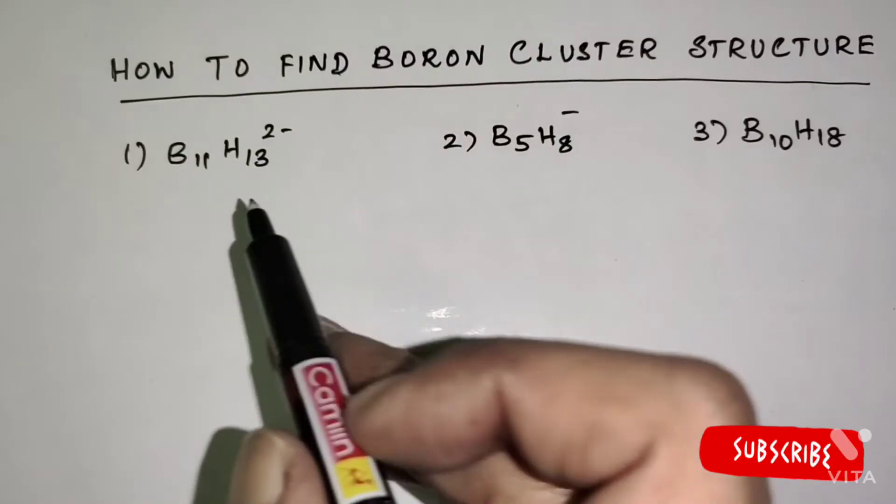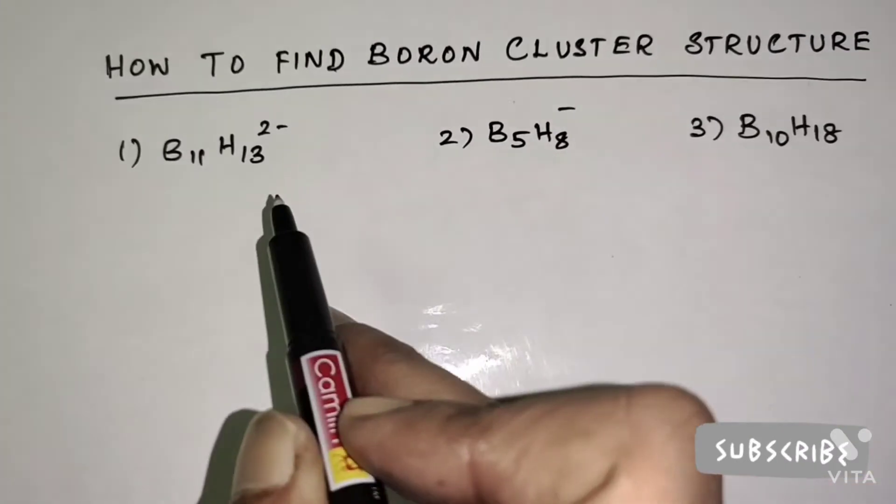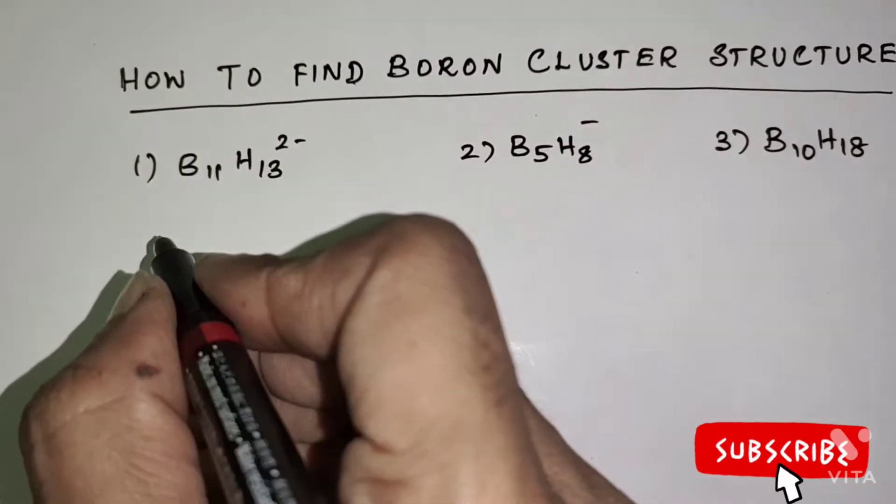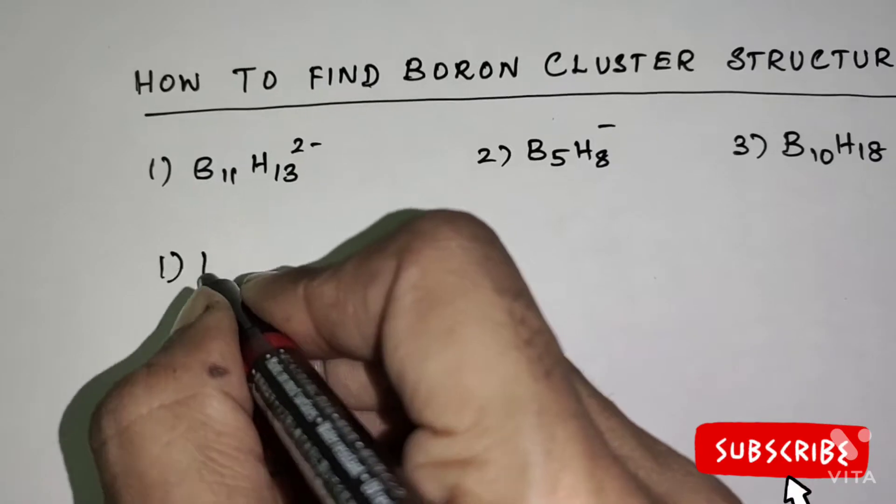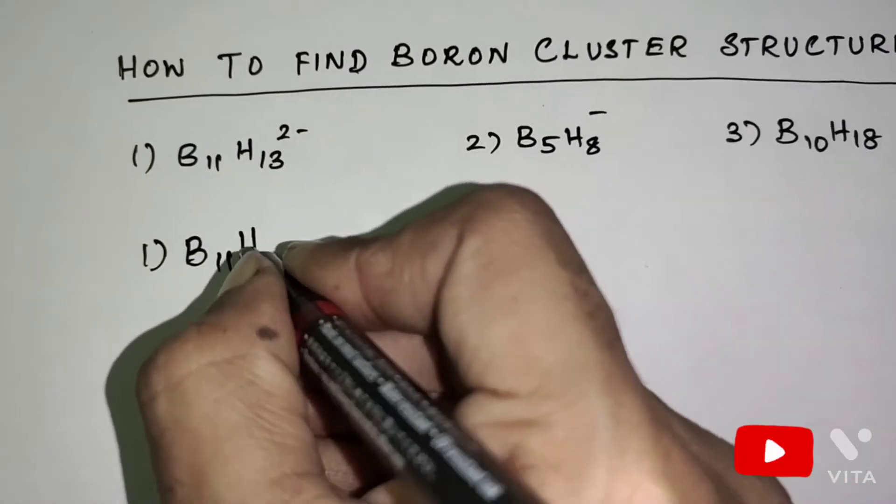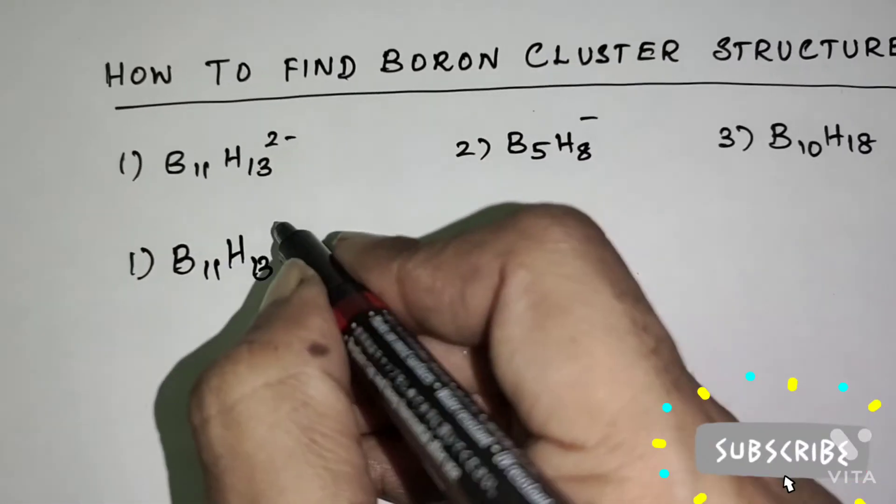Now, I am going to solve these three boron cluster compounds. First one, B11H13 two minus.